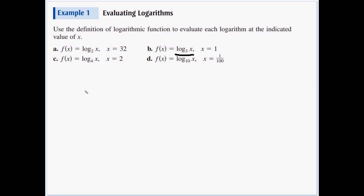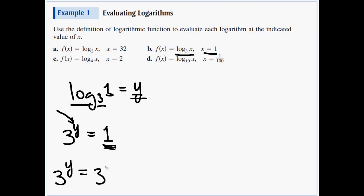Letter b: log base 3 of x when x equals 1. So log base 3 of 1 equals y. Three is the base, y is our exponent, and that's equal to 1. Now we can't get the bases to be the same, but think it through. Something to what power always gives you an answer of 1? Well, the 0 power. 3 to the y is the same thing as 3 to the 0, so y equals 0.